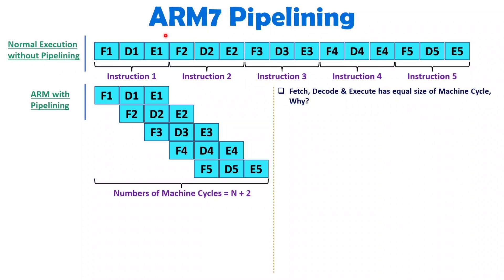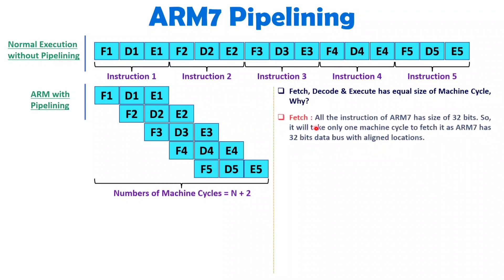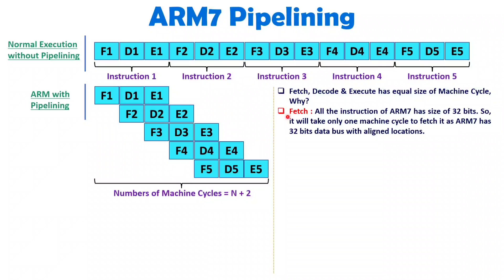You need to understand how ARM7 structure is there. In ARM7, when you fetch the instruction, all instruction sizes are 32 bits — so fixed size instructions are there. As the size of instruction is fixed, you will be observing that the fetching time period is constant. It will not take multiple machine cycles; it will take a constant time period only. The reason is all the instructions of ARM7 have the same size of 32 bits.